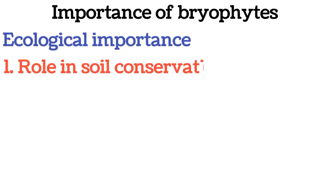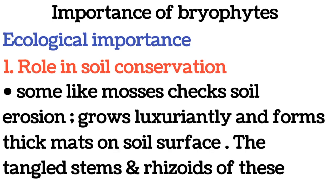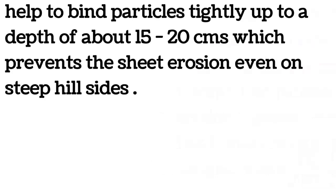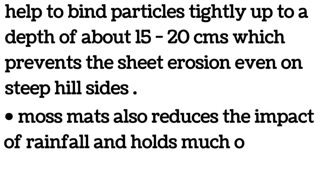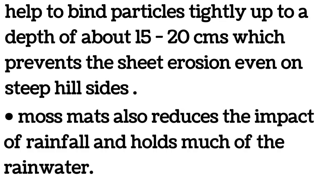Ecological importance. One: role in soil conservation. Some, like mosses, check soil erosion. They grow luxuriantly and form thick mats on soil surface. The tangled stems and rhizoids of these help to bind particles tightly up to a depth of about 15 to 20 centimeters, which prevents sheet erosion even on steep hillsides.